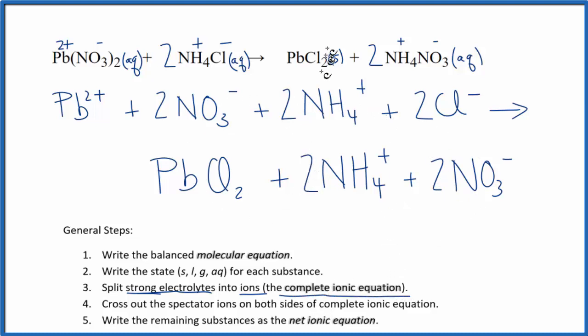Now we're going to cross the spectator ions out. These are things that appear on both sides of the equation. I can see there's two of these nitrate ions here and two here. Since I have them in the reactants and the products, I can cross those out.